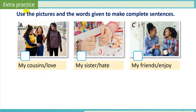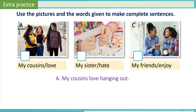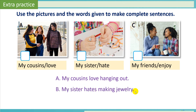Let's do extra practice — use the pictures and the words given to make complete sentences. Picture A: My cousin loves hanging out. You have one minute to do pictures B and C. The answer for picture B is: My sister hates making jewelry. The answer for picture C is: My friends enjoy texting.